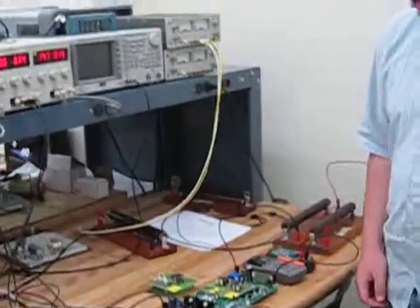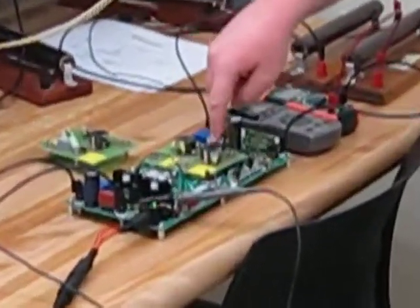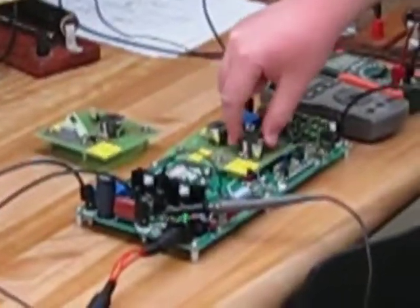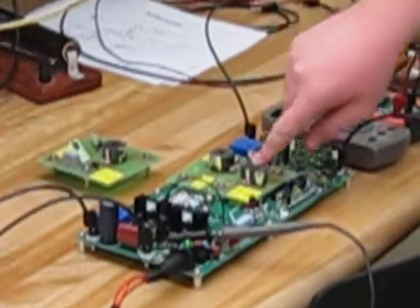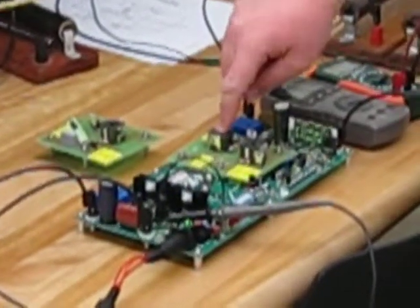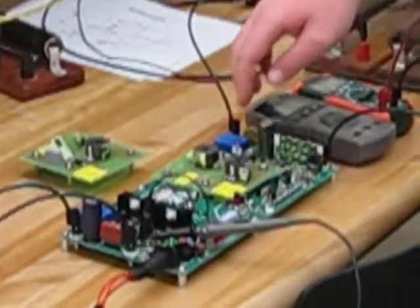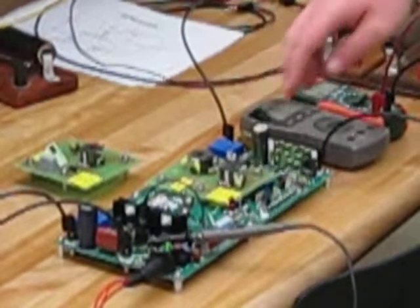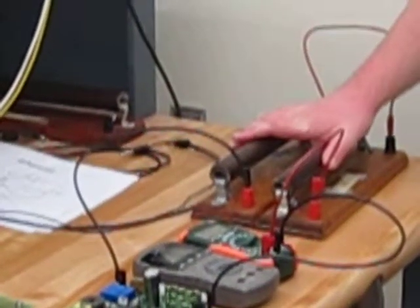So now let me show you the forward converter on the power pole board. We have it set up here. This is the transformer with the three coils on it. And then this is the output inductor of essentially the buck converter, the output capacitance, and the output resistance, which we have at 10 ohms.